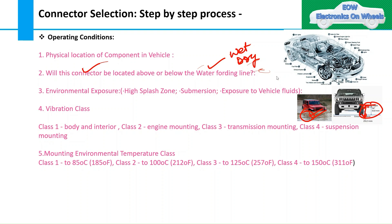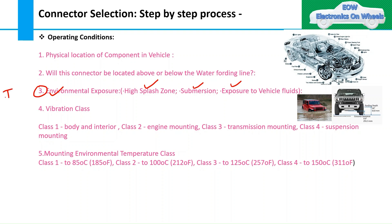The third operating condition factor is environmental exposure. If the connector is in a high splash zone, submersion zone, or exposed to vehicle fluids — for example during a car wash — you need to apply the appropriate IP rating. This could be IP56, IP67, or IP69K for high-pressure wash resistance, or just dust protection. These IP ratings have been discussed in detail in previous videos.